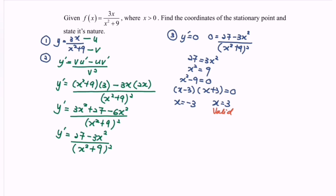We now use the first derivative test to find the nature of the point. When x = 3, substituting into the original equation gives y = 1/2. So the stationary point is (3, 1/2).